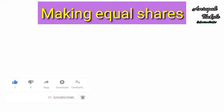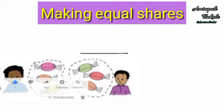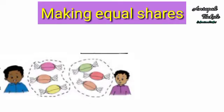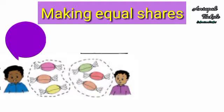Here are Raju and Sanju. They have some sweets. Now let's see how they share them equally by making equal shares. Raju said, my mother has given me six sweets, let's share them equally.